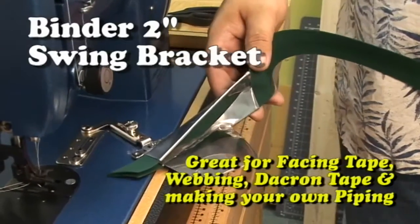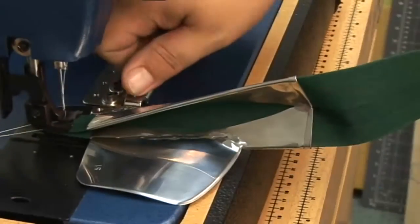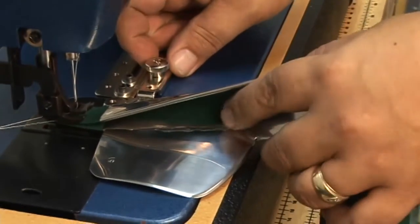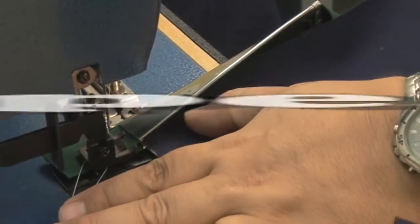This is an awesome 2 inch binder Sailrite had manufactured just for you, our customers. It works well with the 2 inch facing, the 2 inch webbing, 2 inch Dacron tape, and even making your own piping.